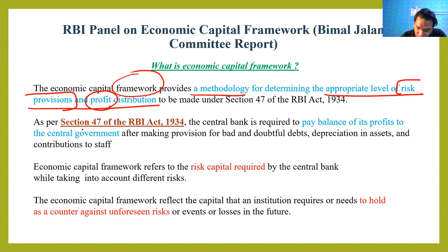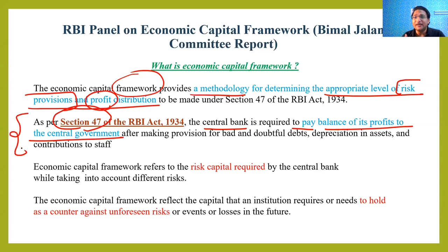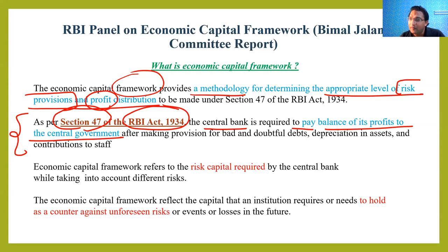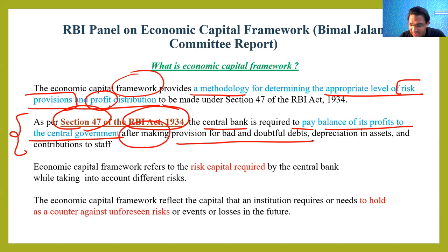Section 47 of the RBI Act requires the central bank to pay the balance of its profit to the central government. RBI is a statutory organization set up under a law, and that law clearly states that the central bank will pay its profit to the central government — but only after making provision for bad and doubtful debts, depreciation in assets, and contributions to staff.